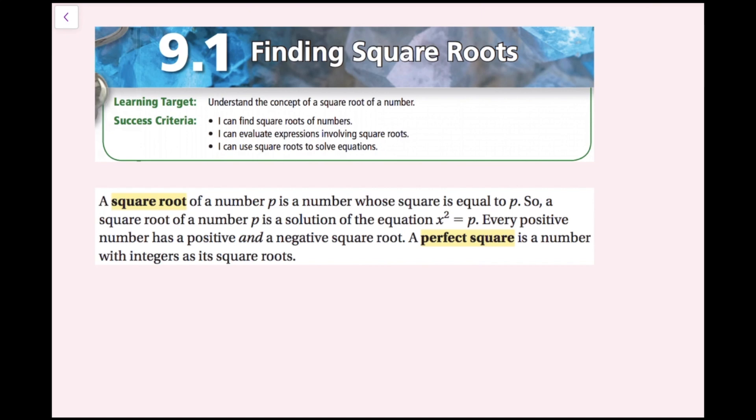A square root of a number p is a number whose square is equal to p. So a square root of a number p is a solution of the equation x squared equals p. Every positive number has a positive and negative square root. A perfect square is a number with integers as its square roots.